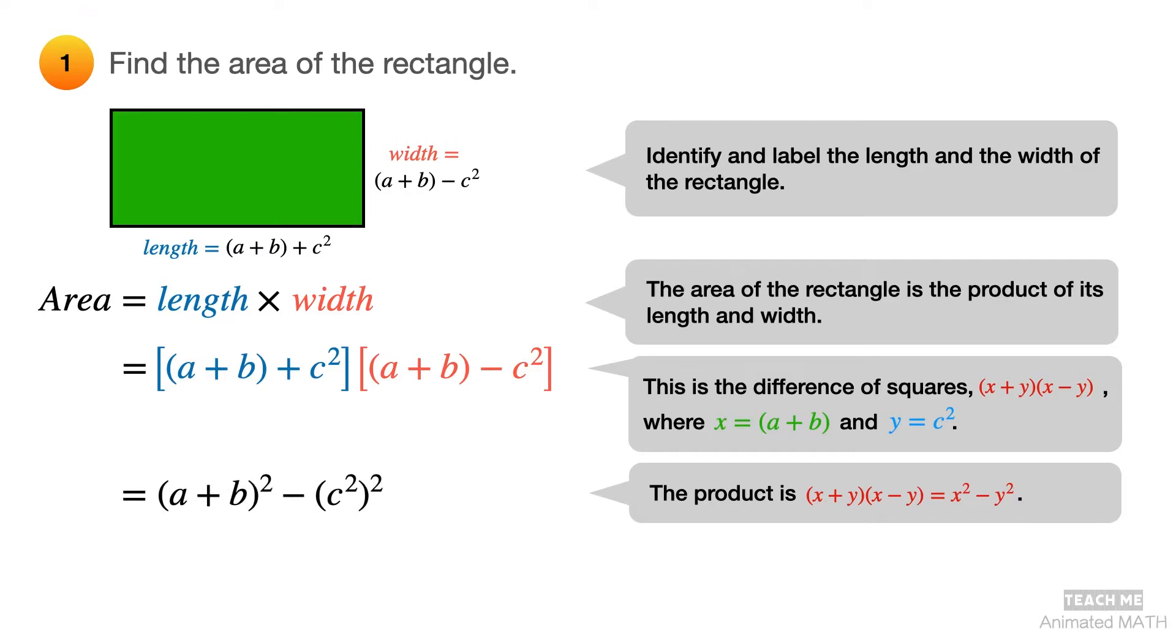Its product is x squared minus y squared. So, substitute a plus b for x and substitute c squared for y. Simplify the expression. And the final answer is a squared plus 2ab plus b squared minus c raised to 4.